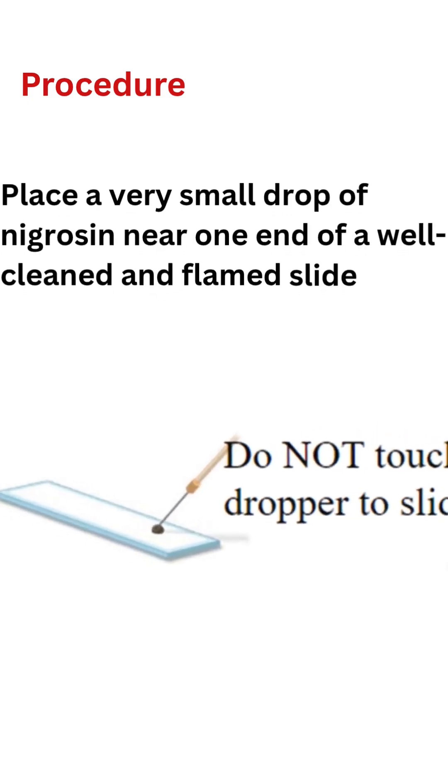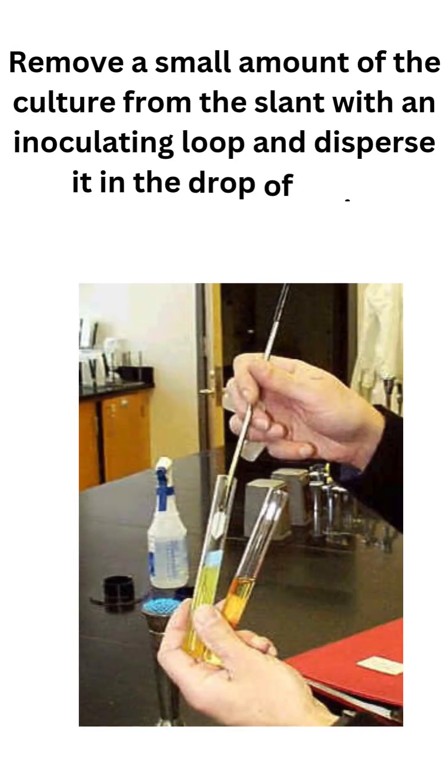Procedure: Place a very small drop of negrosin near one end of a well-cleaned and flamed slide. Remove a small amount of the culture from the slant with an inoculating loop and disperse it in the drop of stain.